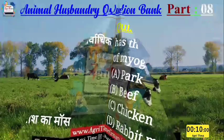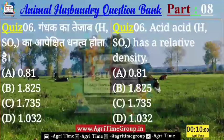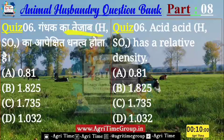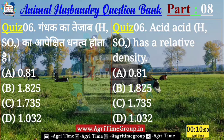Question number 6 — यह रहा आपके screen पर। गंधक के तेजाब (Sulfuric Acid) का specific gravity पूछा जा रहा है। Option में दिये हैं: 0.81, 1.825, 1.735, या फिर 1.032। तो बतलाईए — गंधक के तेजाब का specific gravity कितना होता है?